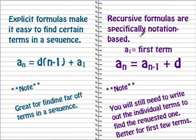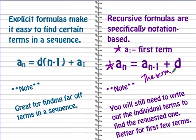A recursive formula uses notation to tell us what's going on in our sequence. There are two parts: first, you identify the first term. Second, to find any term a-sub-n, it equals the term before it — a-sub-(n minus 1) — plus our common difference. So any term added to our common difference gives us the next term in the sequence.